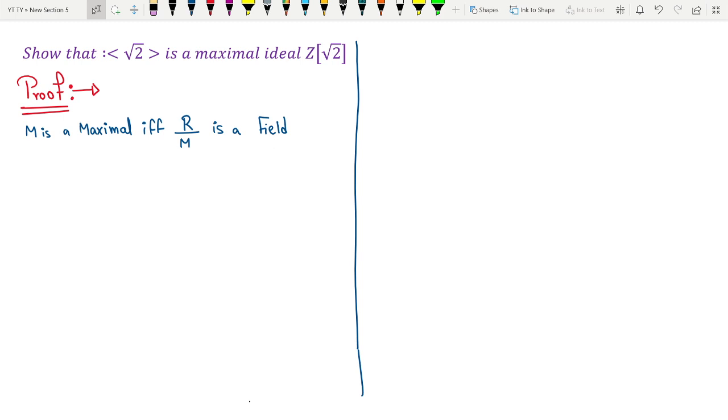The result that I am going to use is to prove any ideal is a maximal ideal, I need to show that my r by m, that is the quotient ring, is a field. So my claim is that z root 2 mod the ideal generated by root 2 is a field.